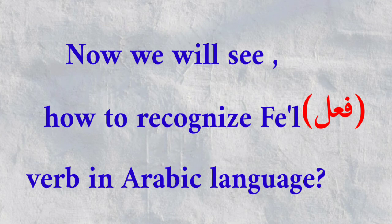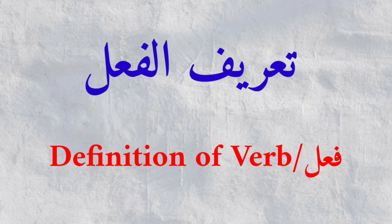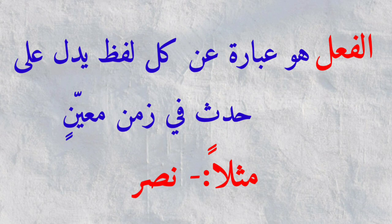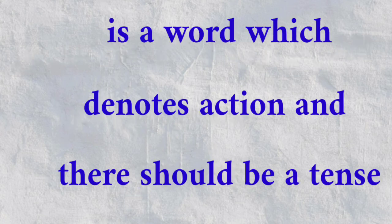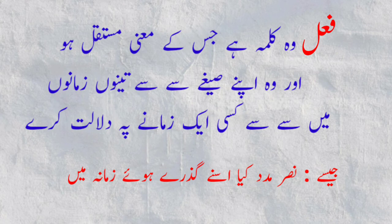Now we will learn how to recognize fi'l in Arabic language — what are the signs to understand and recognize the fi'l. But before that, I would like to define what is fi'l. Al-fi'lu huwa ibaratun an kulli lafzin yadullu ala hadathin fi zamanin mu'ayyanin, for example, nasara. In English: a fi'l is a word which denotes an action with a definite tense. In Urdu: fi'l woh kalima hai jiske ma'na mustaqil hon aur apne seeghe se tinon zamanon mein se kisi ek zamane par dalalat kare, jaise nasara — usne madad ki guzashta zamane mein.